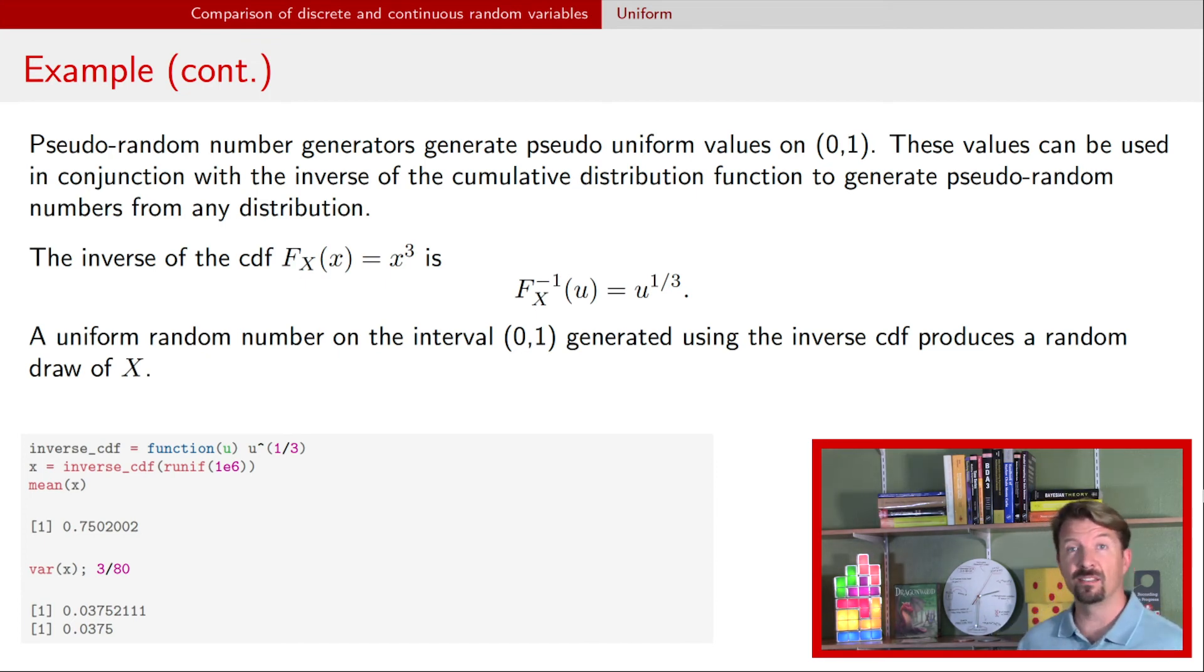We can take the mean of that and it's approximately three-fourths. We saw in the previous video that that's exactly what the mean or expectation of the distribution is. We can calculate the variance of those draws and we see that it's very close to the three-eightieth that we found on the previous video.